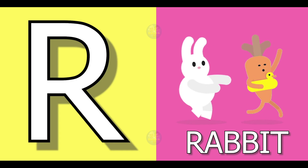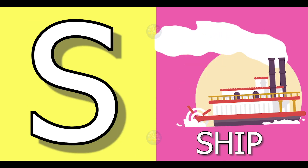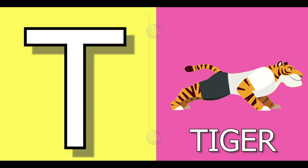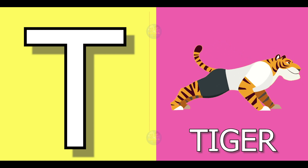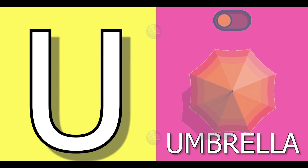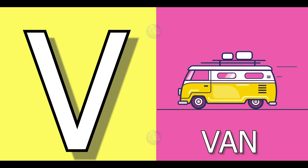R for rabbit, S for ship, T for tiger, U for umbrella, V for band.